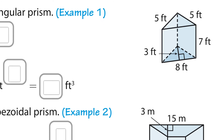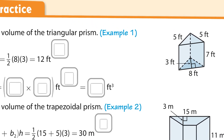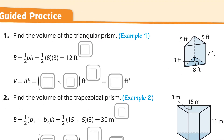To find the volume, we have to find the base area times the height. The base area is that big B. We have to take the area — the base is a triangle, so the base area is the area of that triangle. To take the area of a triangle, it's 1/2 base times height.